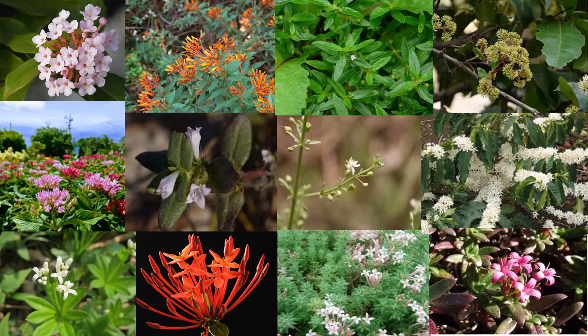Rubiaceae, commonly known as the madder family, are a clade of flowering plants consisting of 660 genera with more than 11,000 species of herbs, shrubs, and trees, distributed primarily in tropical areas of the world.